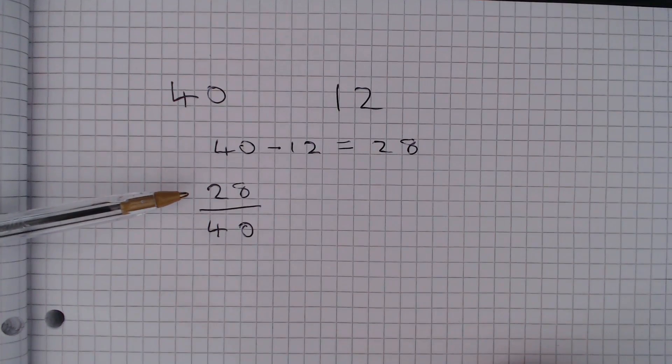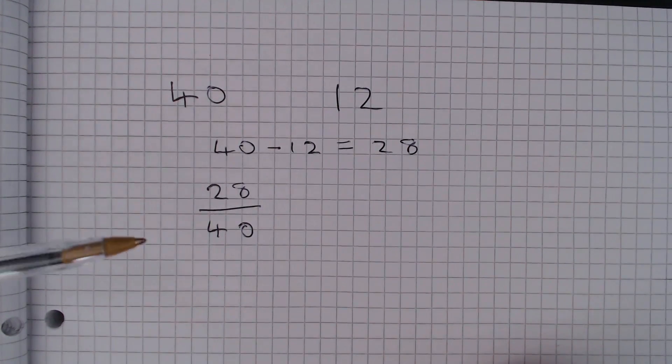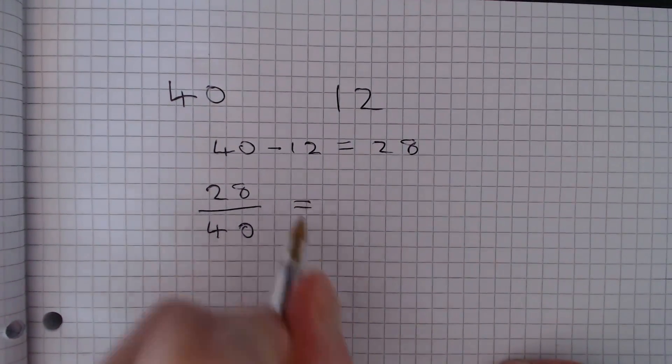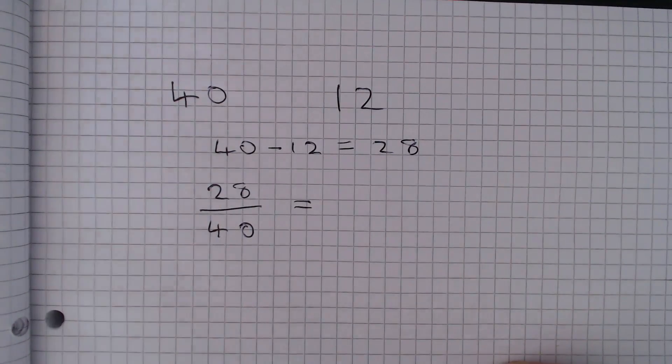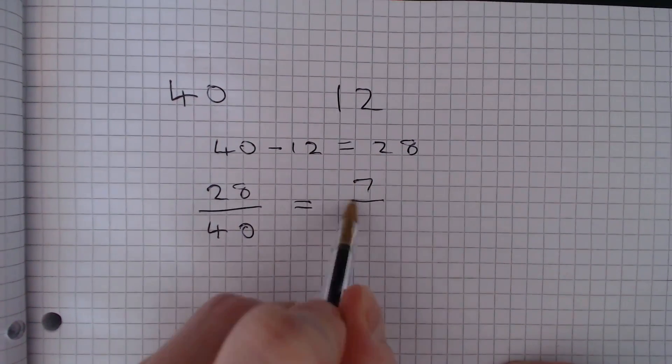We'll notice that both the top and the bottom are multiples of 4, so we can divide the top and the bottom of the fraction by 4, which will give us 7 over 10.